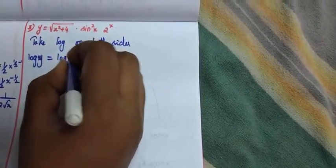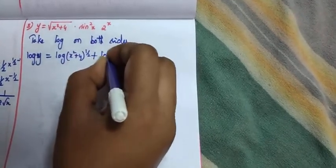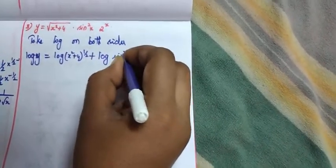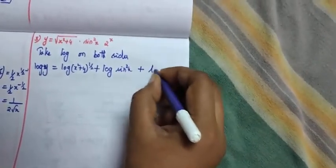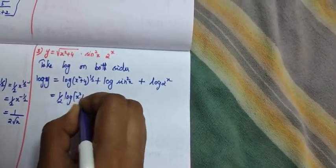So log of x squared plus 4 to the whole power 1 by 2 plus log of sin squared x plus log of 2 power x. Power is equal to 1 by 2 into log of x squared plus 4.